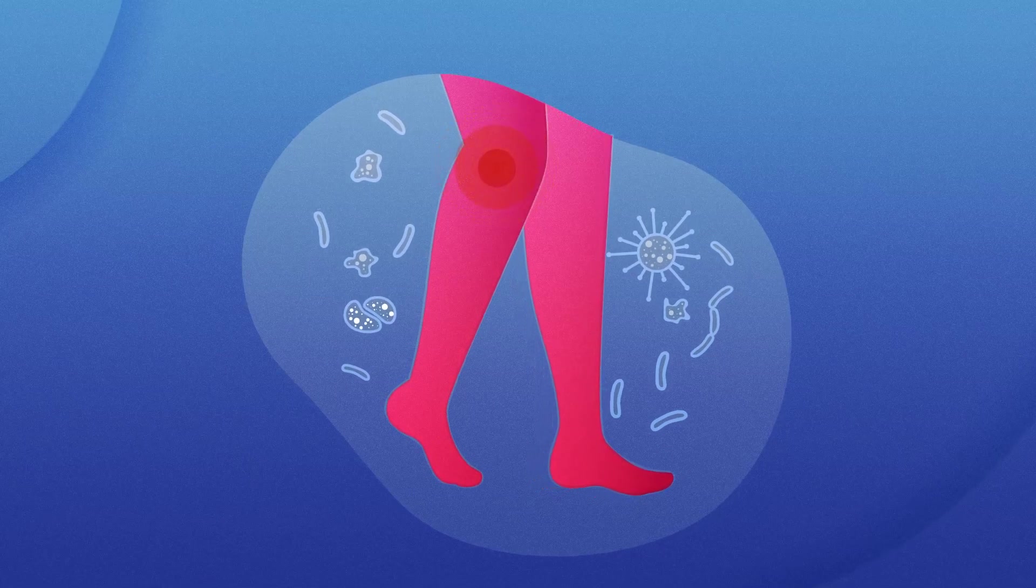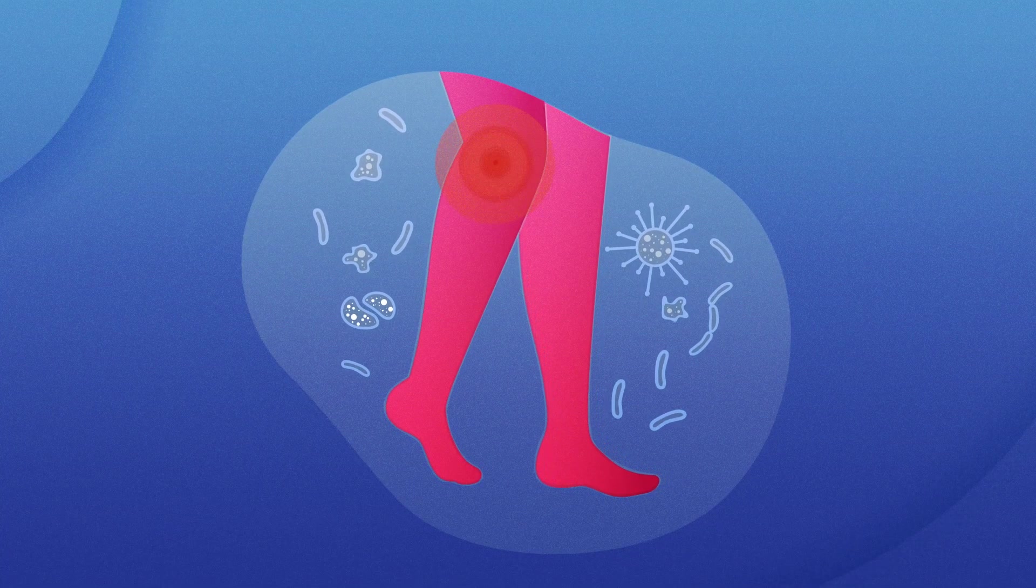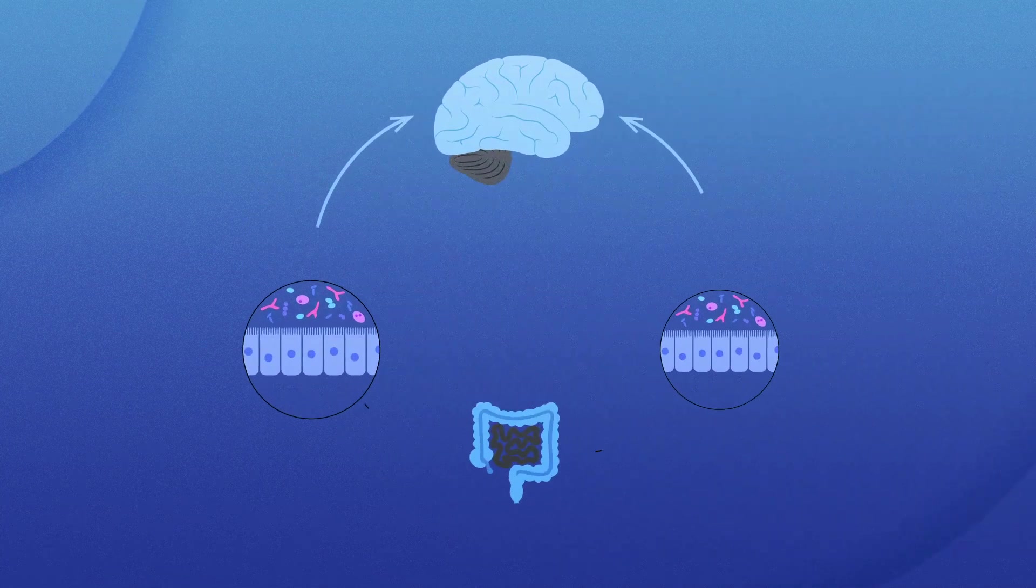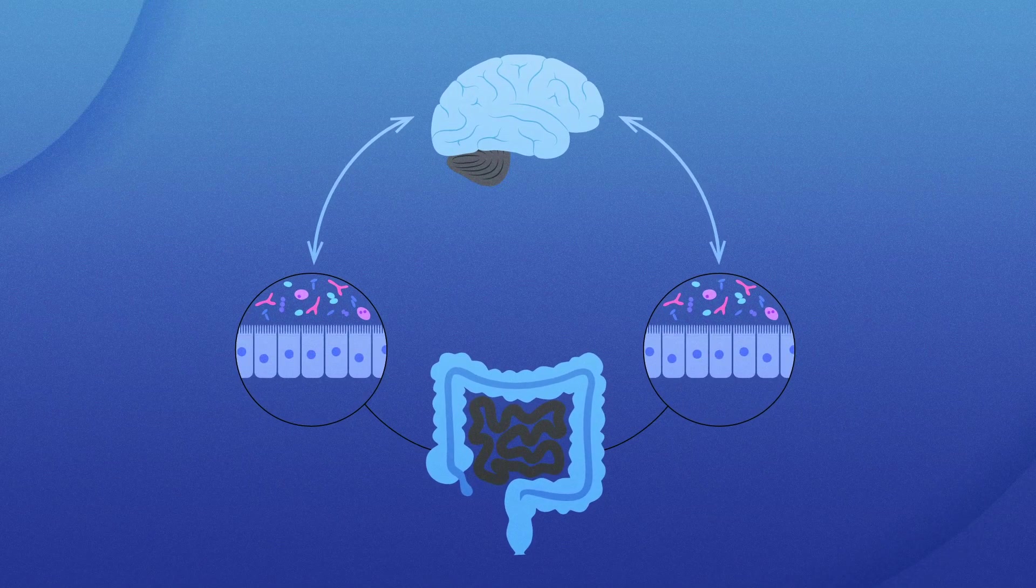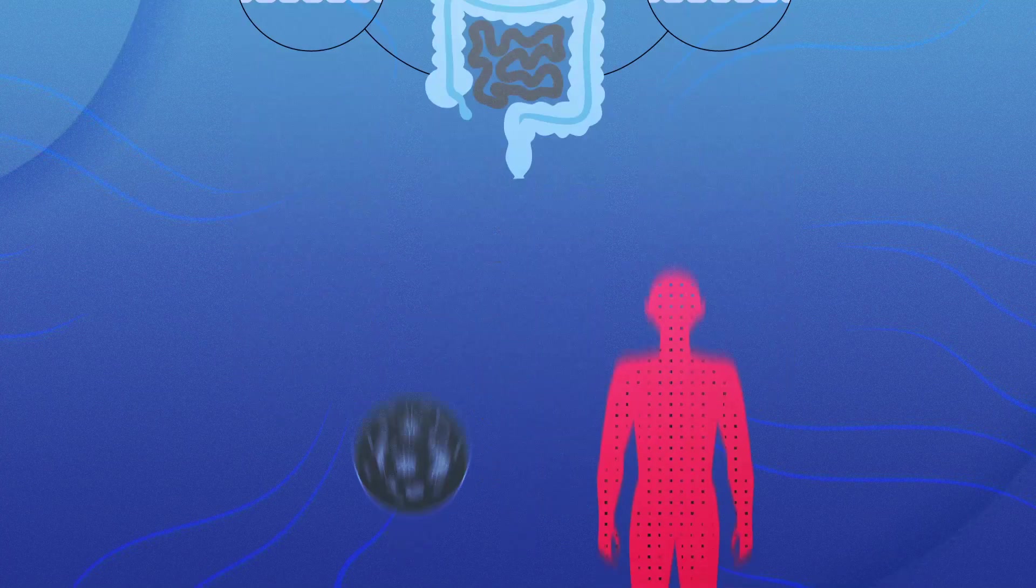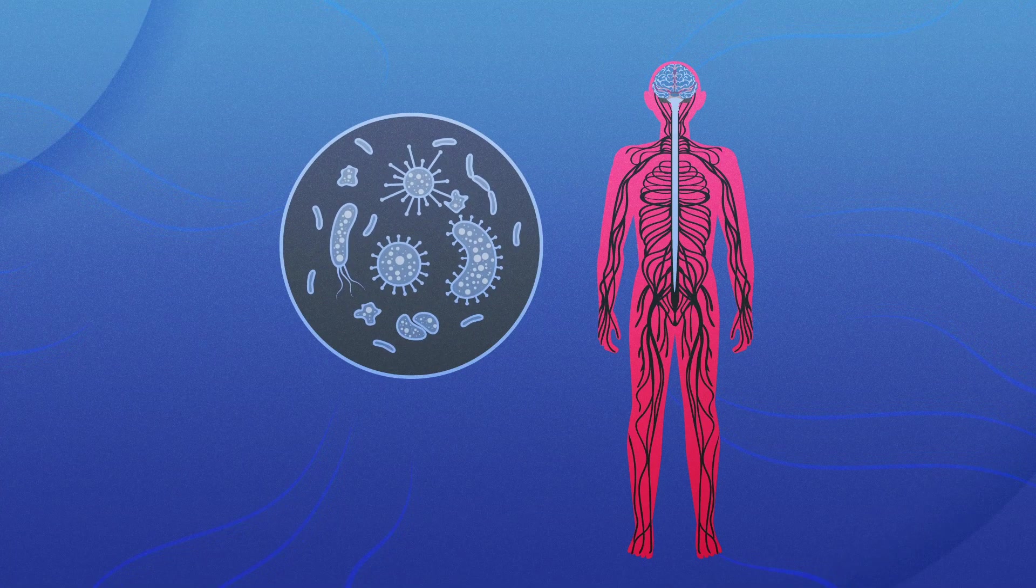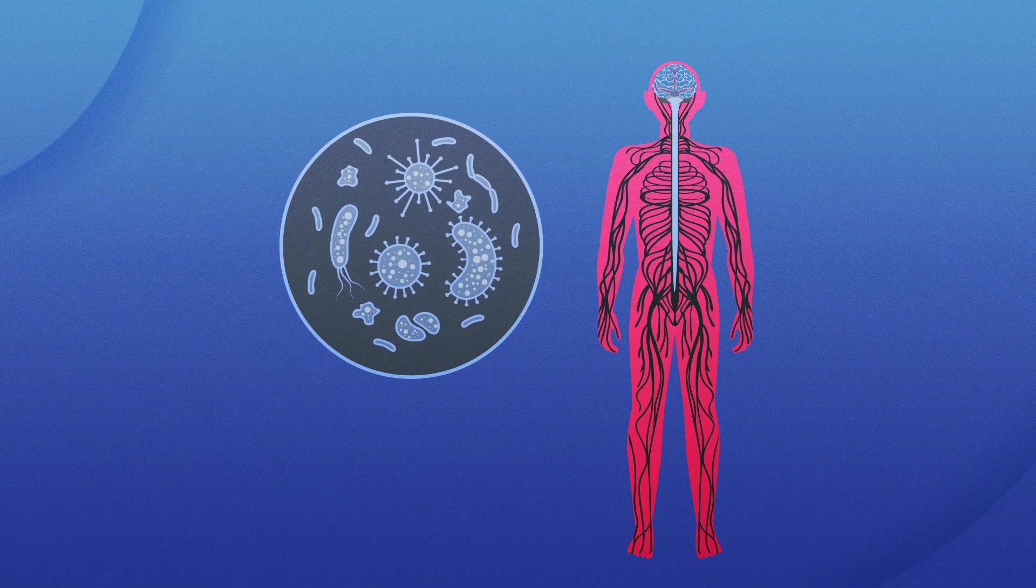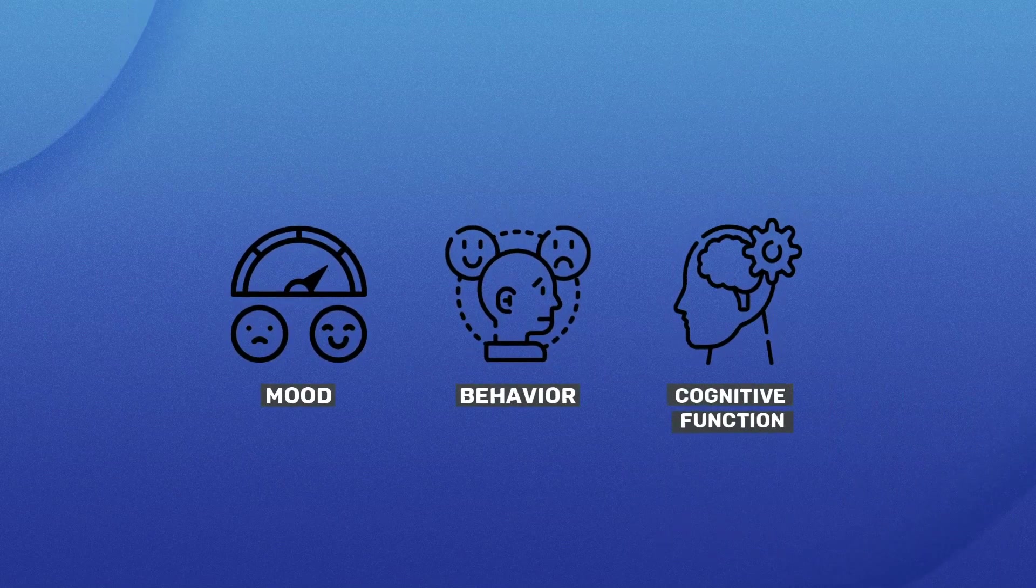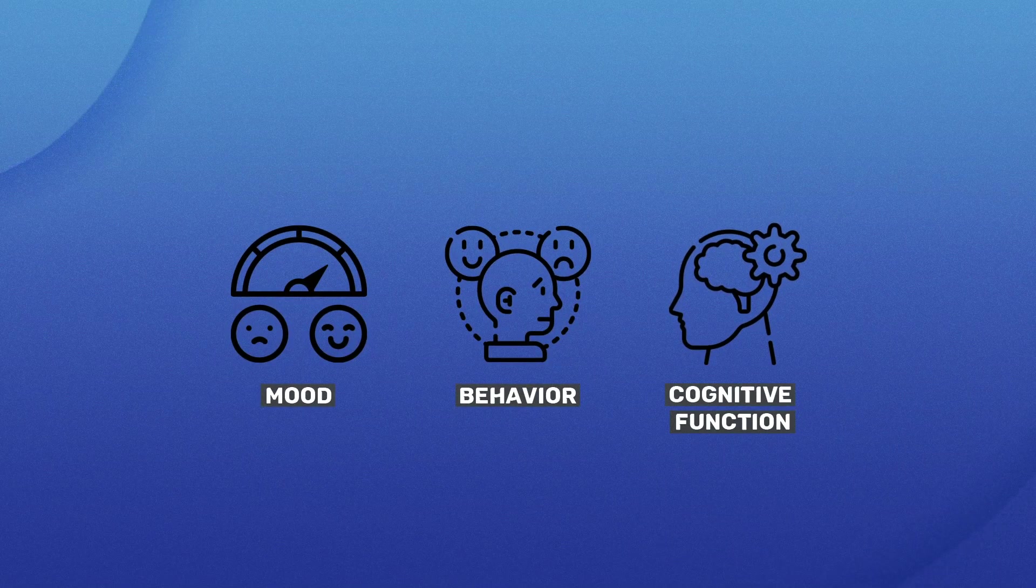Beyond immune function, our gut microbiome also influences inflammation and mental health through the fascinating microbiome-gut-brain axis. Recent scientific breakthroughs have revealed the intricate interplay between our gut microbiome and the central nervous system, potentially affecting our mood, behavior, and cognitive function.